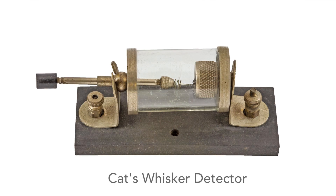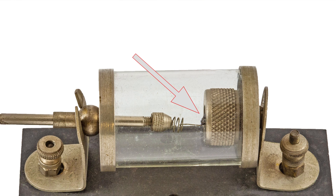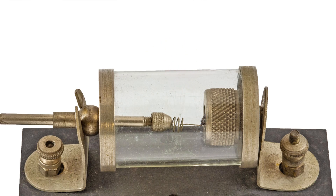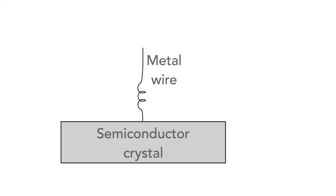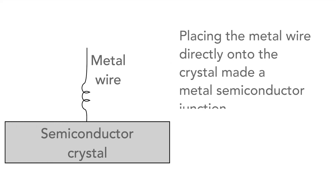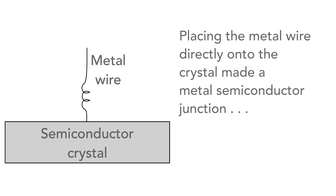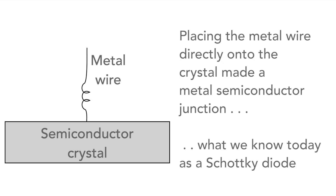These radios used a form of diode which was often nicknamed the cat's whisker, because what it consisted of was a piece of galena or iron pyrite, which was effectively a semiconductor, and a thin wire — the cat's whisker — was placed onto this to make a diode junction. This was a metal-on-semiconductor diode junction, and placing the metal wire directly onto the crystal made a metal-semiconductor junction. This is the beginning of what we know today as a Schottky diode.